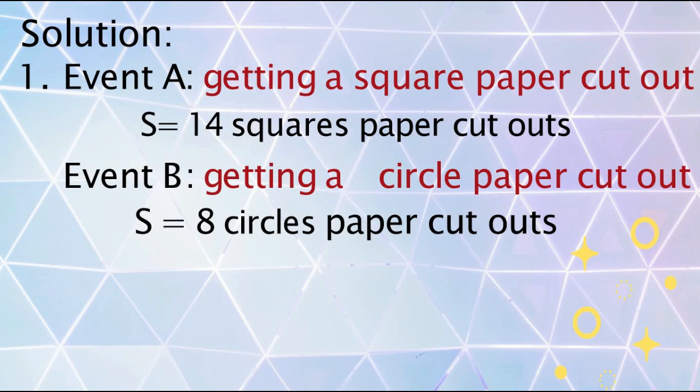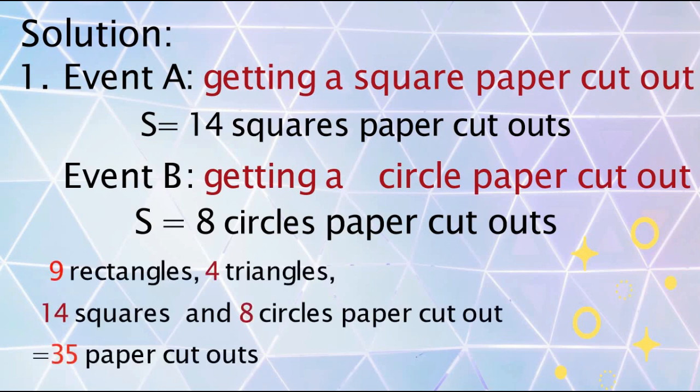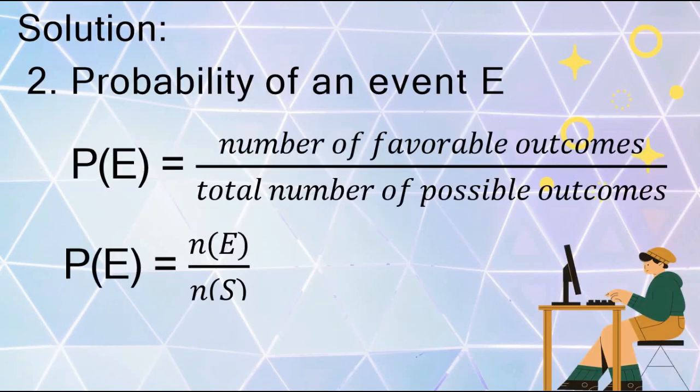You also have to identify the total number of possible outcomes, which is 35 paper cutouts — 9 rectangles, 4 triangles, 14 squares, and 8 circles. The next step is to find the probability of each event. The probability of an event equals the number of favorable outcomes over the total number of possible outcomes, or in symbols: P(E) = n(E) / n(S).